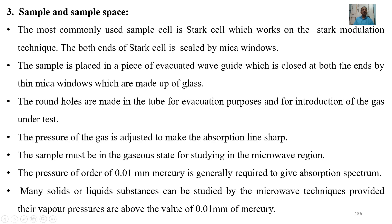The third part is sample and sample space. The most commonly used sample cell is the Stark cell, which works on the Stark modulation technique. Both ends of the Stark cell are sealed by mica windows. The sample is placed in a piece of evacuated waveguide closed at both ends by mica windows made of glass. Round holes are made in the tube for evacuation and for introduction of the gas under test. The pressure of the gas is adjusted to make the absorption line sharp. The sample must be in the gaseous state, and a pressure of the order of 0.01 mmHg is generally required to give an absorption spectrum. Many solid or liquid substances can be studied by microwave techniques provided their vapour pressures are above 0.01 mmHg.